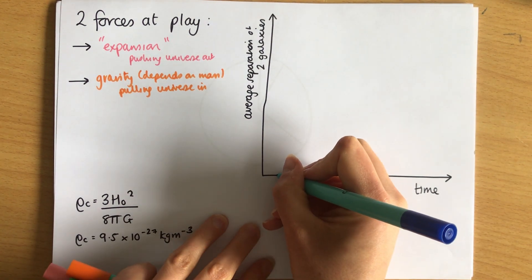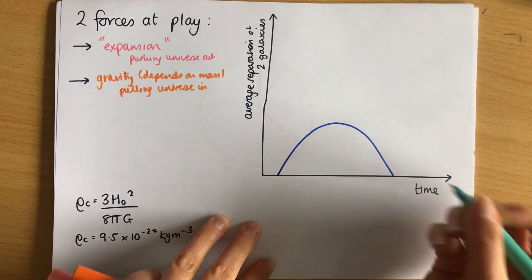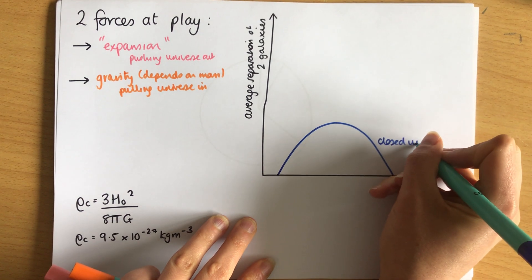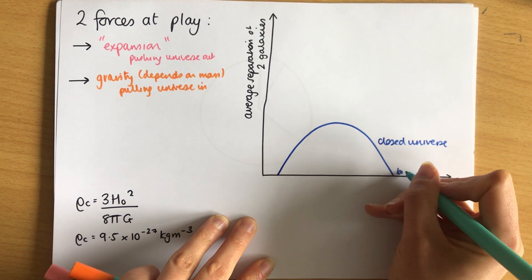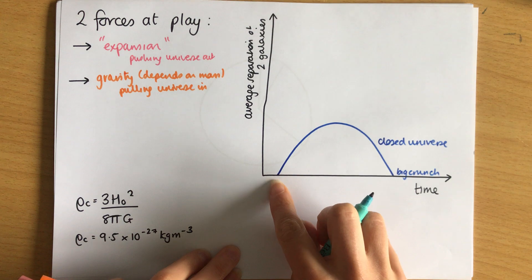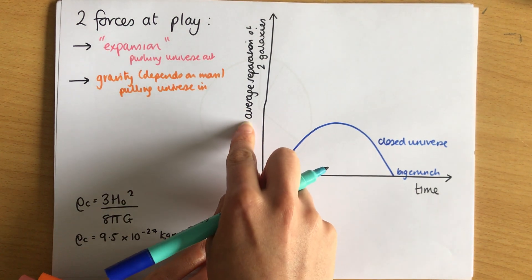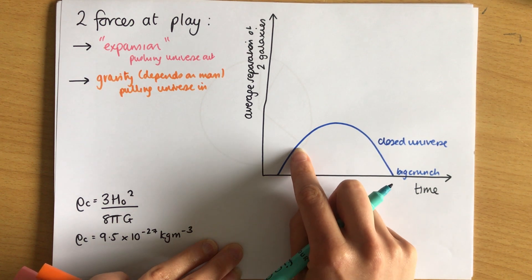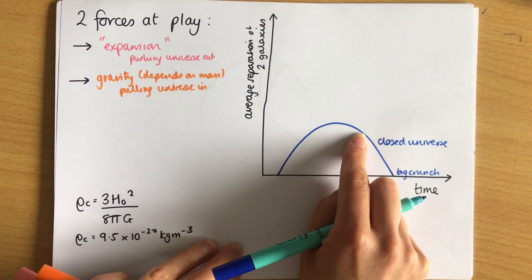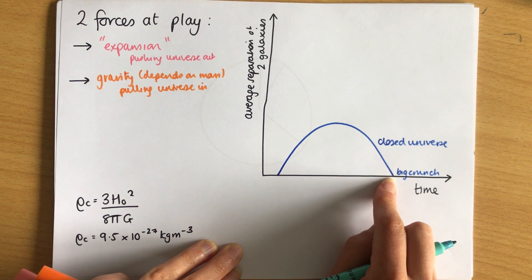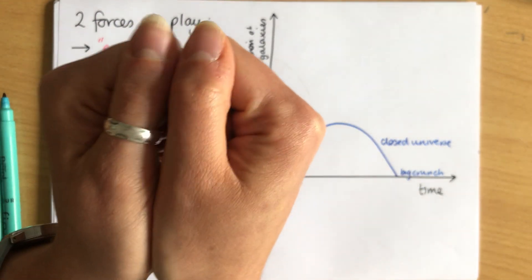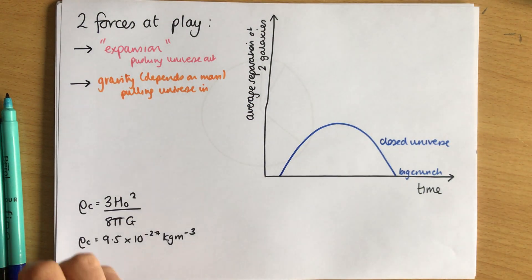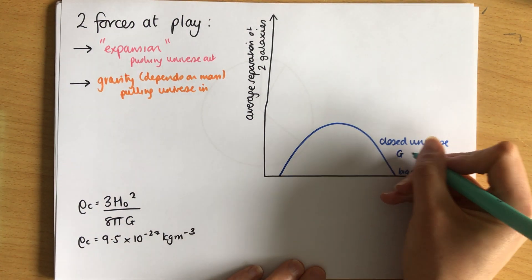The first is called a closed universe, which ends with the big crunch. On a graph of average separation of two galaxies against time, the universe expands to a maximum point and then contracts back together into one point. This happens if gravity is bigger than expansion.